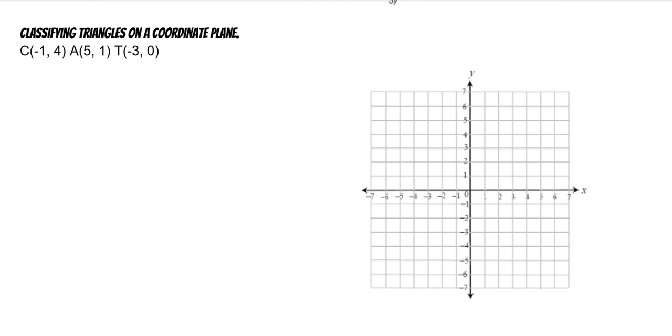Classify the triangle on a coordinate plane. All right, so we have C, which is negative 1, 4. A, which is at 5, 1. And T, which is at negative 3, 0.